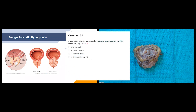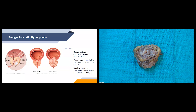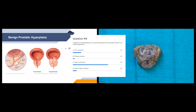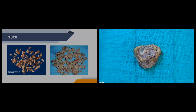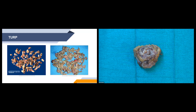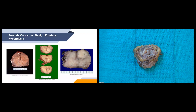Concerning features for prostate cancer in a TURP specimen include yellow coloration and white firm areas. Here are images of a typical TURP specimen — most of the time they are multiple pale tan-pink tissue fragments, and these ones look normal with no yellow coloration or white firm areas.